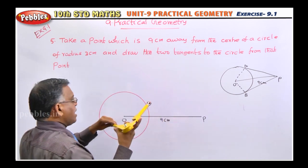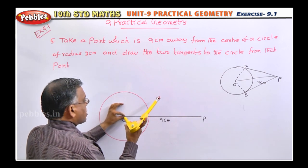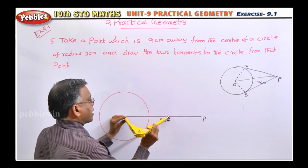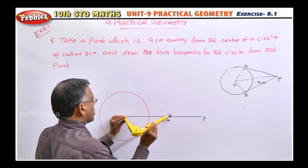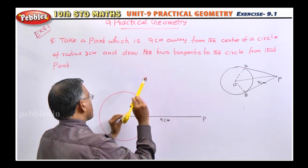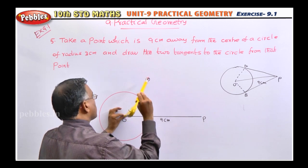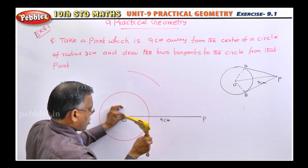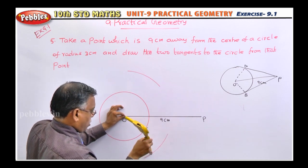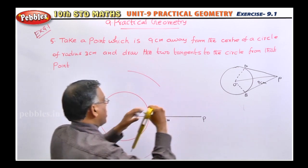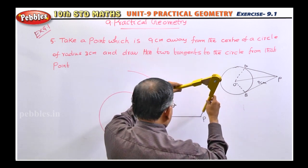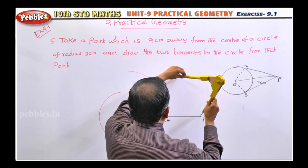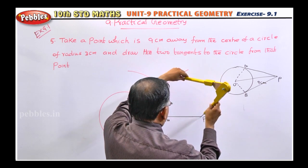With O as center and radius more than half of OP, you draw arcs on both sides. You can extend them as well — that doesn't matter. Now you draw arcs on this side also — you have to draw the same arc. Similarly, with P as center and the same length, you have to draw the arc. It will cut.